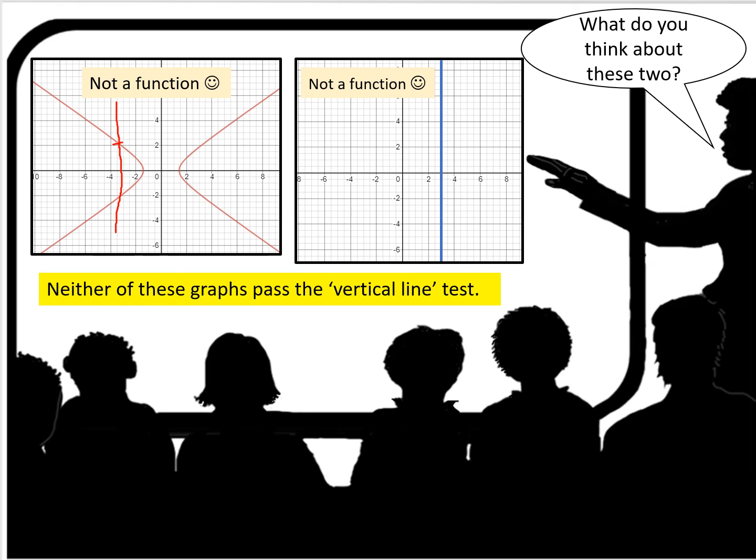Well, because it doesn't pass the vertical line test. So neither one of these passes the vertical line test. This passes through two points. That fails. And if I were to do a straight line, obviously it passes through way more than just one point.